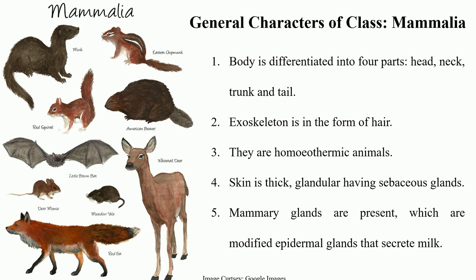In addition to that, mammals have several features quite different from the other phyla. The body of mammalian organisms is differentiated into four parts: head, neck, trunk, and tail. However, the various animals included in Class Mammalia have a variable body shape, as this class contains the most heterogeneous group of animals. These are highly evolved animals compared to animals belonging to other phyla.